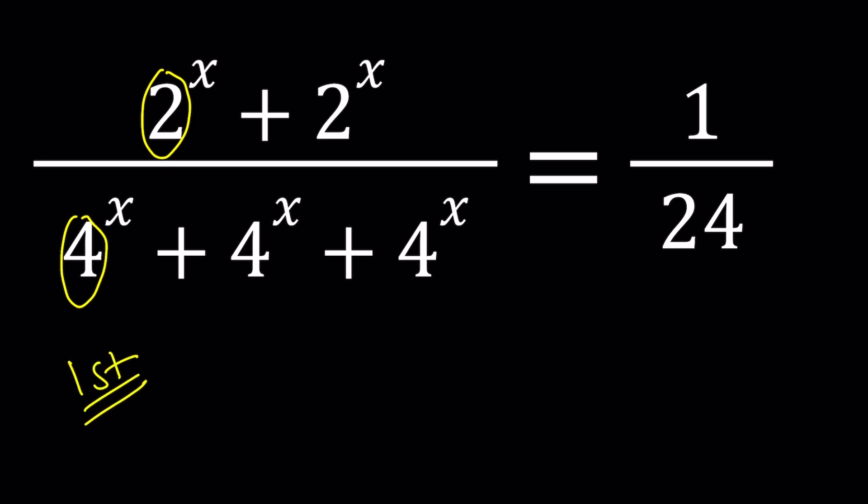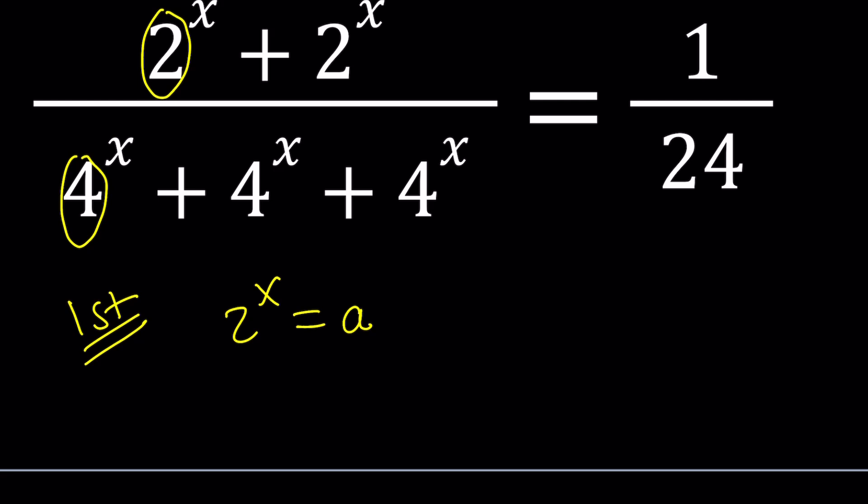For my first method, I want to use substitution. Okay, make sense? And substitution works as follows. I'm going to set 2^x equal to a. Why? I don't know. Just wanted to pick a. And then, this is going to give me the following.